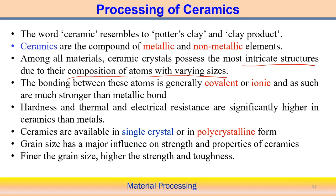When you look into the structure of the ceramic component, the bonding between these atoms is generally covalent and ionic bonding. That is why the covalent or ionic bond is actually much stronger as compared to the metallic bond. Therefore, the strength of the ceramic material is usually more as compared to the metallic component.